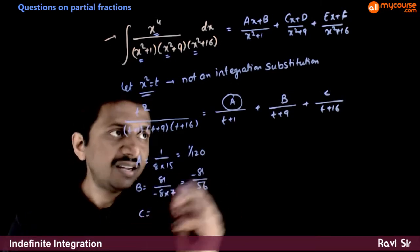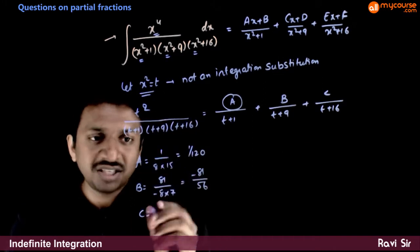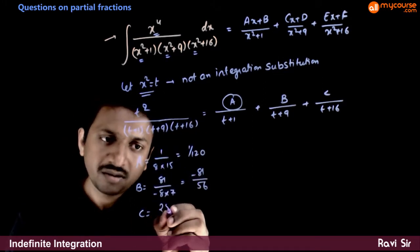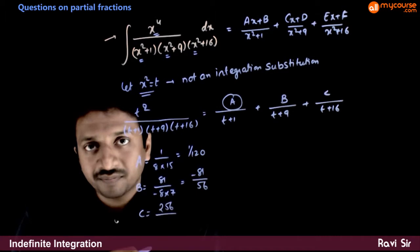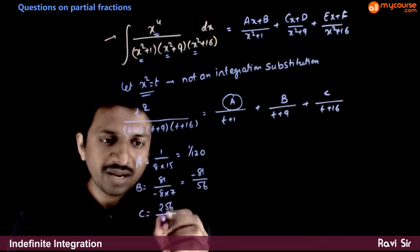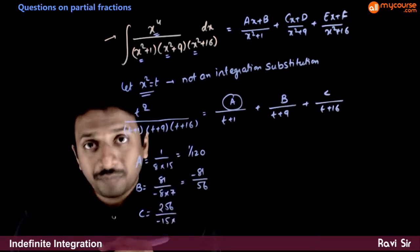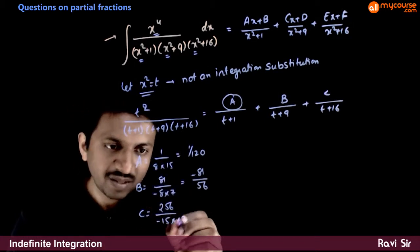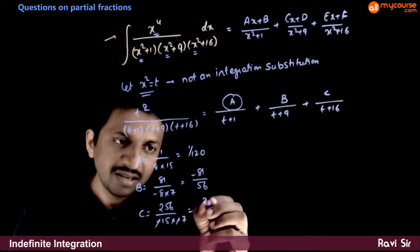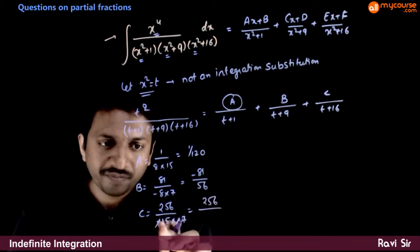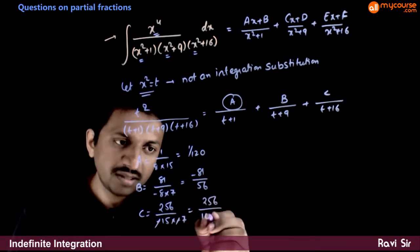And c, put t equal to minus 16. So minus 16 whole square is 256 divided by minus 16 plus 1 is minus 15 times minus 16 plus 9 is minus 7. So minus and minus gets cancelled. So 256 by 105.